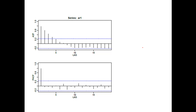Only the spikes that exceed the horizontal dash line are considered significant. In this example, in the ACF chart, we have a horizontal dash line here and here. In the PACF, we also have two horizontal dash lines. Only the spikes — the vertical lines — that exceed the horizontal dash line are considered significant.